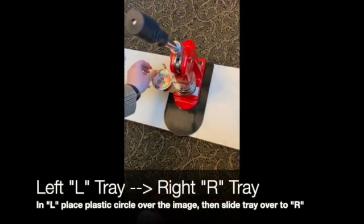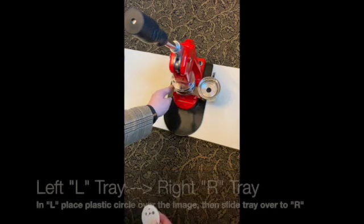In the left tray place the plastic circle over the image then slide the tray to the right.